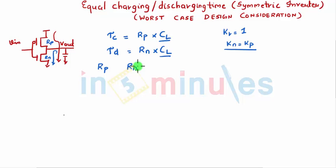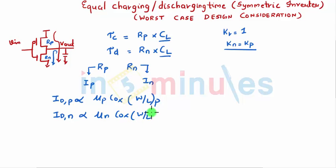Rp and Rn we can always correlate with current through the PMOS and current through the NMOS. We know that drain current through a PMOS is directly proportional to mu_p Cox (W/L) of PMOS. Similarly for NMOS it's mu_n Cox (W/L) of NMOS.